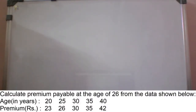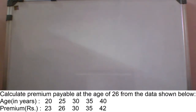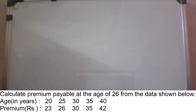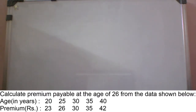Calculate premium payable at the age of 26 from the data shown below. Age and premium are given, meaning x and y values are given.